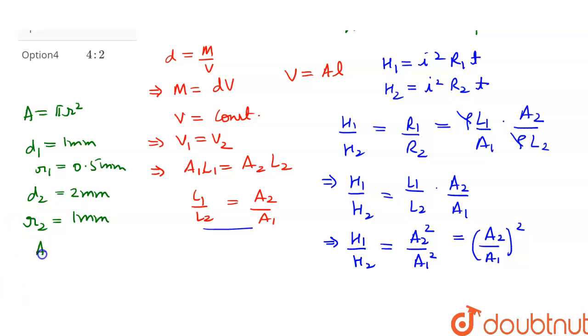So we can write A₁ = πr₁² and A₂ = πr₂². So the ratio of A₂/A₁ comes out to be r₂²/r₁².